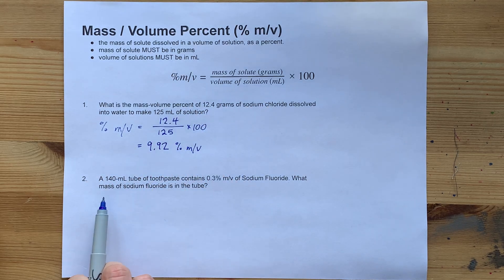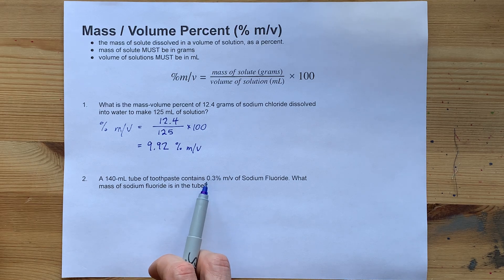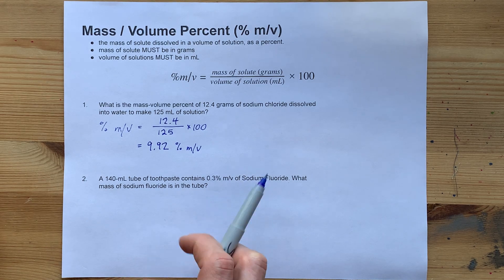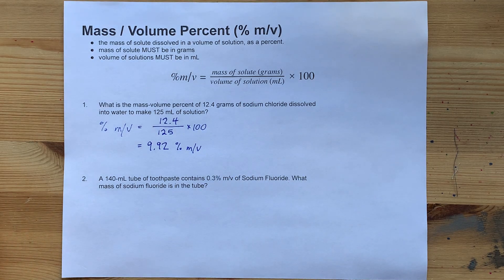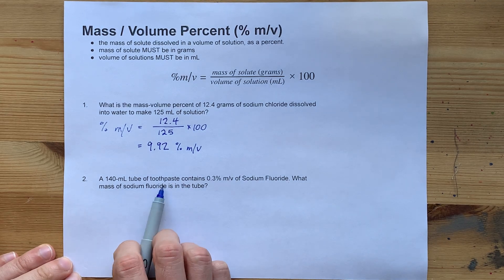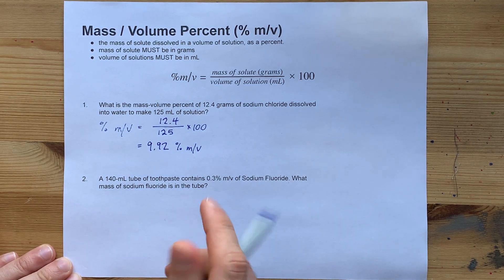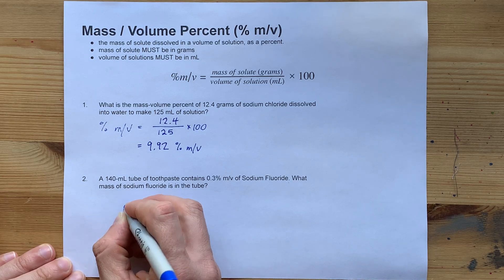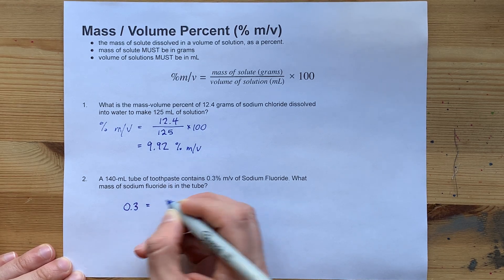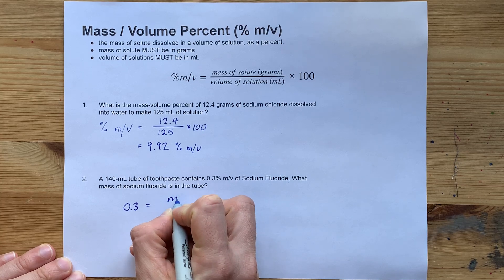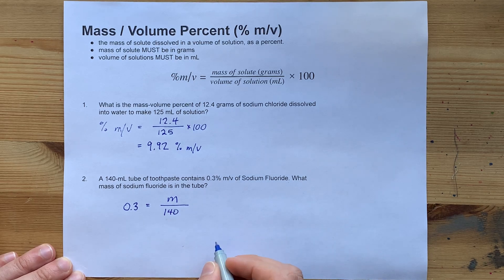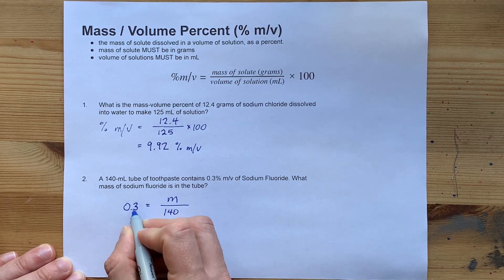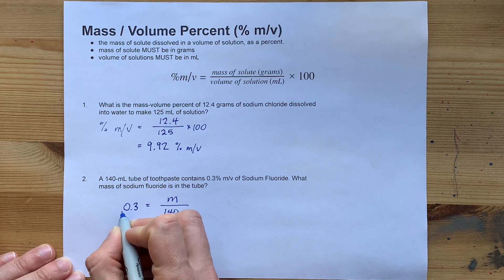Lastly, a 140 milliliter tube of toothpaste contains 0.3% mass by volume of sodium fluoride. I actually looked up Crest, and Crest Kids has that concentration of it. How much actual sodium fluoride is in that tube? Here, you're being given the mass volume percent, it's 0.3. You're being asked for the mass and given the volume. Remember, the volume has to be in milliliters here. Now, I didn't convert this percent into a decimal. It would have been 0.003.